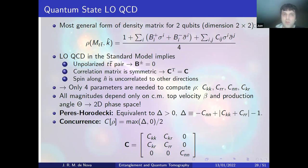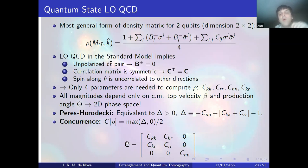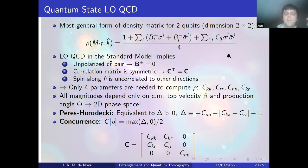At leading order QCD, the standard model implies several things: the tt̄ quantum state is unpolarized (no net polarization), the correlation matrix is symmetric, and the spin along the perpendicular n direction is uncorrelated to other directions. Therefore the correlation matrix is described by only four parameters — the diagonal elements plus one off-diagonal element — out of the 15 elements in the full two-qubit description. All quantities depend only on the top velocity β and the production angle θ, giving a two-dimensional phase space.